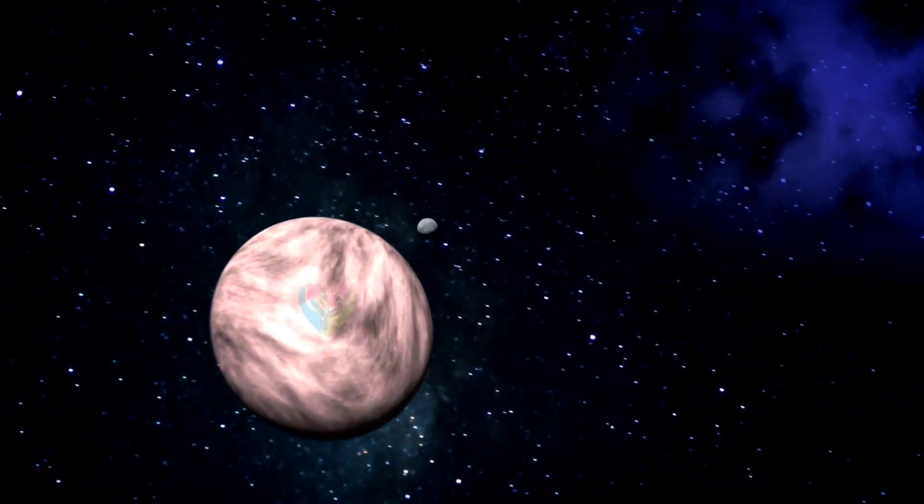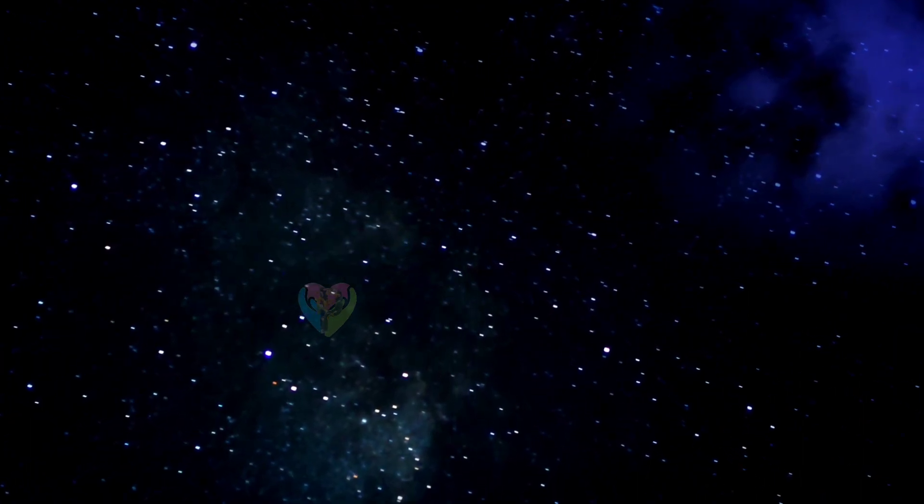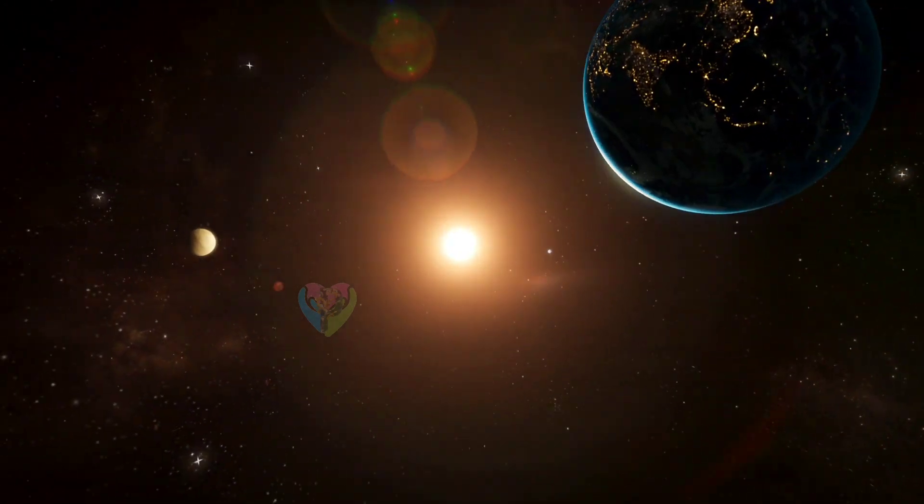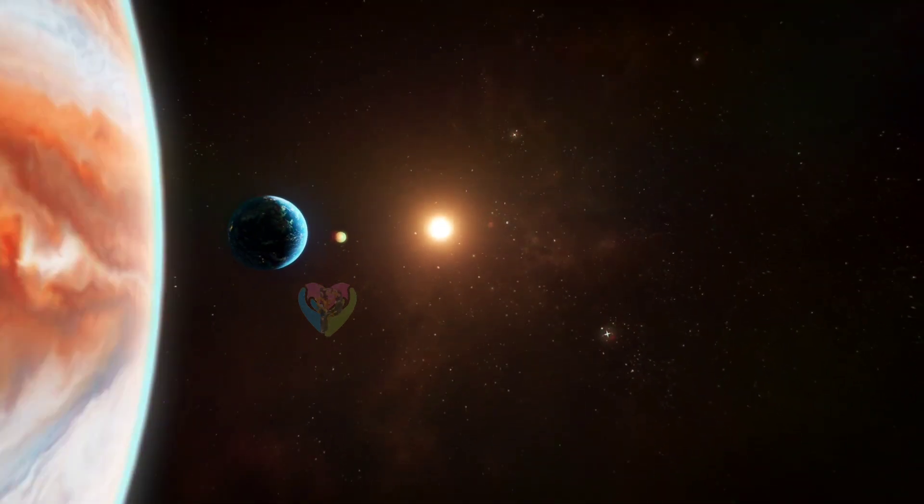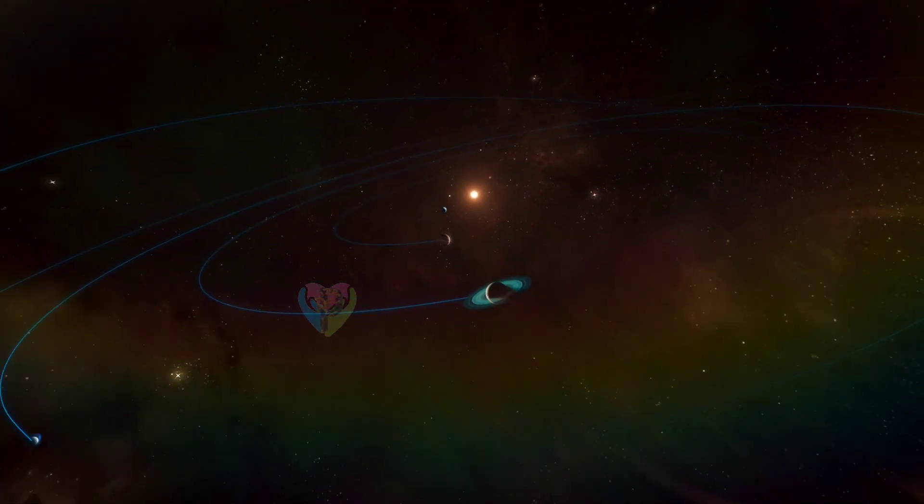The four giant planets of the outer system are substantially larger and more massive than the terrestrials. The two largest, Jupiter and Saturn, are gas giants, being composed mainly of hydrogen and helium.